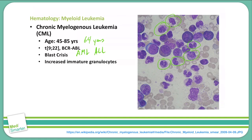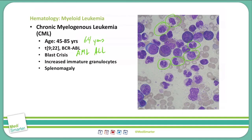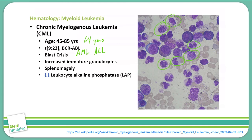The increased immature granulocytes seen in CML can lead to splenomegaly, because those white blood cells back up in the spleen as it tries to destroy them, causing the spleen to enlarge. We also see a very low level of leukocyte alkaline phosphatase, which is a result of low activity in malignant neutrophils. In contrast, a benign neutrophilia — such as a leukemoid reaction — will show leukocyte alkaline phosphatase staying near normal, with only a slight decrease in response to stressors like infections, medications, or severe hemorrhage.